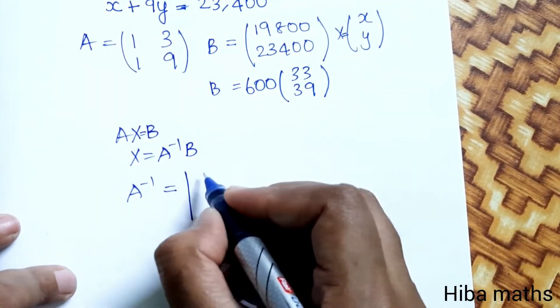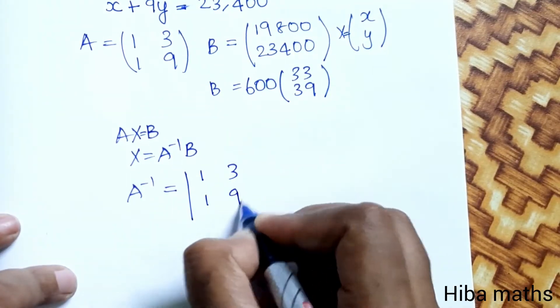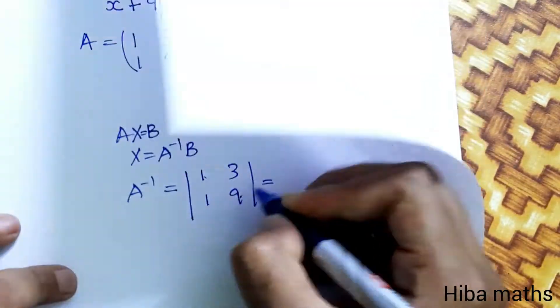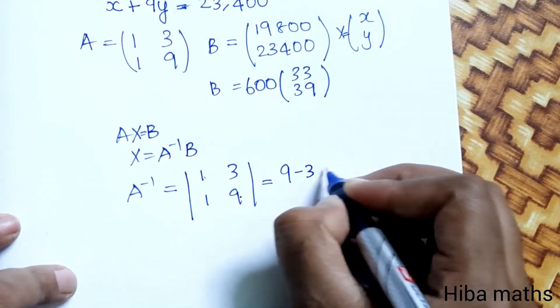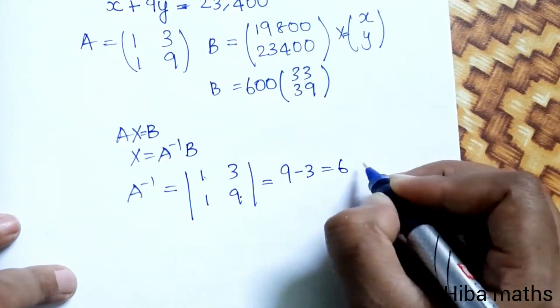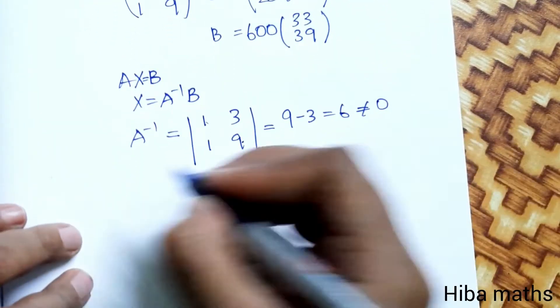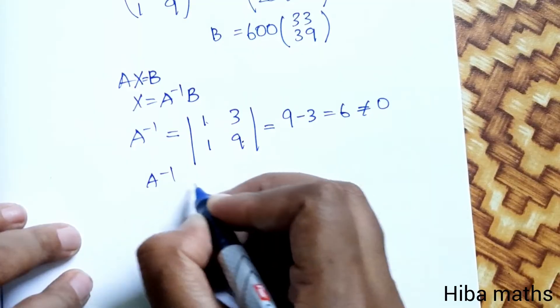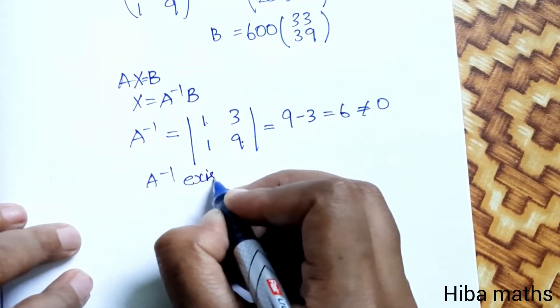The matrix A is [1, 3; 1, 9]. The determinant of A equals 9 minus 3, which is 6. Since 6 is not equal to 0, A inverse exists.